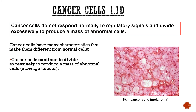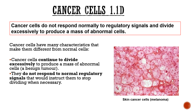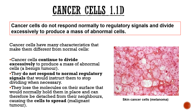Cancer cells continue to divide excessively, producing a mass of abnormal cells that don't follow the signals regulating normal cell pathways. When this mass forms it's known as a benign tumour — it stays in place. However, these cells don't respond to normal regulatory signals to stop. Sometimes surface molecules aren't sufficient to hold them together, so some cancer cells detach and form a clump elsewhere, causing a secondary cancer — also known as a malignant tumour.